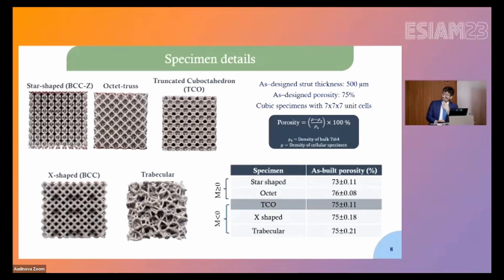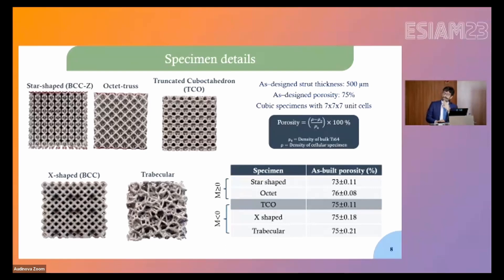Two topologies are nominally categorized as stretch-dominated: the star shape (equivalently BCCZ) and the octet truss. The remaining three are nominally bending-dominated, including a trabecular structure in which there is no longer a periodic arrangement of cells, but rather a random arrangement of struts resembling the architecture of natural trabecular bone.